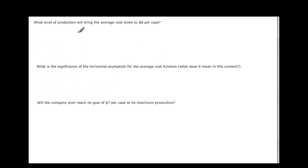What level of production will bring the average cost down to $8? Well, now we know the average cost. So 8 equals 20,000 plus 6x over x. If we solve, multiply both sides by x to clear the fraction. 8x equals 20,000 plus 6x. Subtracting 6x, we get 2x equals 20,000. Dividing by 2, that's 10,000. 10,000 cases would bring the average cost down to $8 per case.